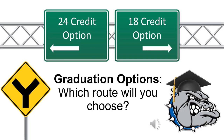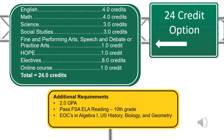Here are the graduation options. There's the standard 24-credit option for students pursuing a four-year standard diploma, and then there's the 18-credit option. The 18-credit option is mostly designed for students pursuing graduation in three years who have previously been retained and/or are at risk for dropout. For the 24-credit option, you must earn four credits of English, four credits of math, three credits of science, three social studies, one credit in either a fine or performing art, speech, debate, or practical art, one credit of Hope PE, eight electives, and half a credit of an online course.